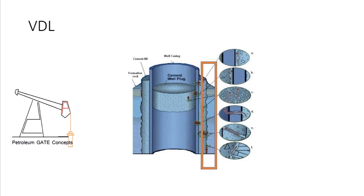While a VDL or the variable density log provides the wave train of the received signal and can indicate the quality of the cement bond between the casing and the cement and the cement and the formation.